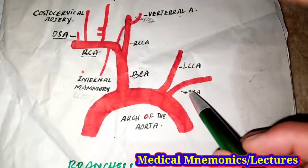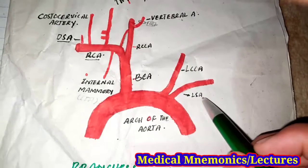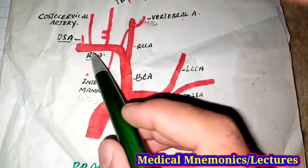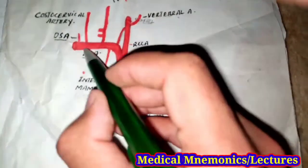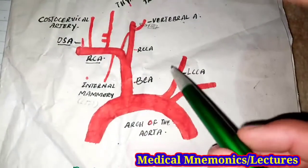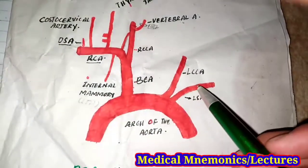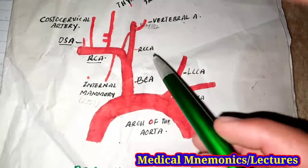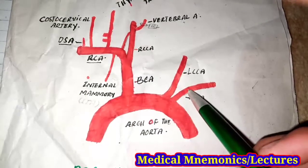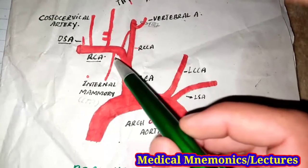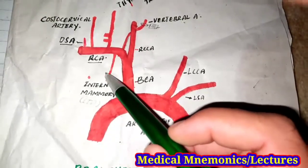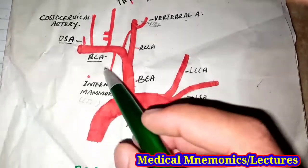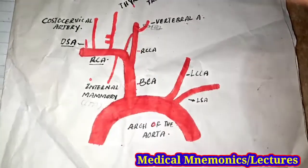The left subclavian artery supplies the left arm and the right subclavian artery supplies the right arm. The vertebral artery from both the left and right subclavian arteries also supplies the brain, and the internal thoracic artery from both subclavian arteries supplies the thorax.